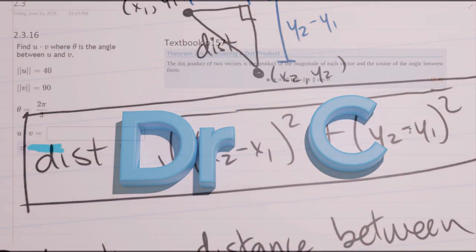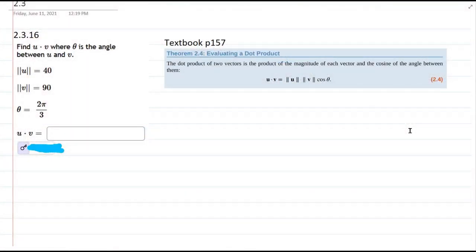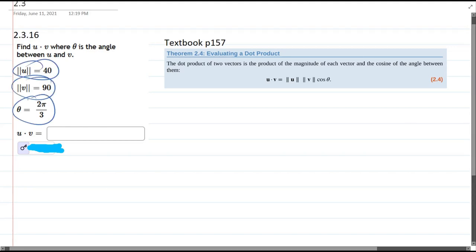This question, we're about to compute a dot product. However, we can't just use the regular dot product formula because we do not know anything really about the vectors u and v themselves, except their magnitudes and the angle between them.